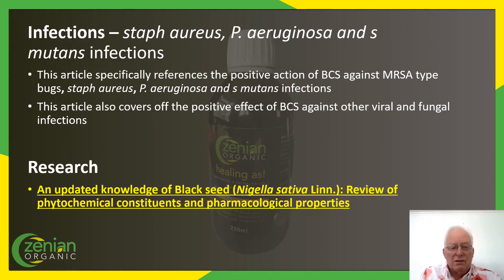In the next slide here, I've included a reference to an article on black cumin seed oil against MRSA-type bugs, Staph aureus, P. aeruginosa, and Staph mutans infections.